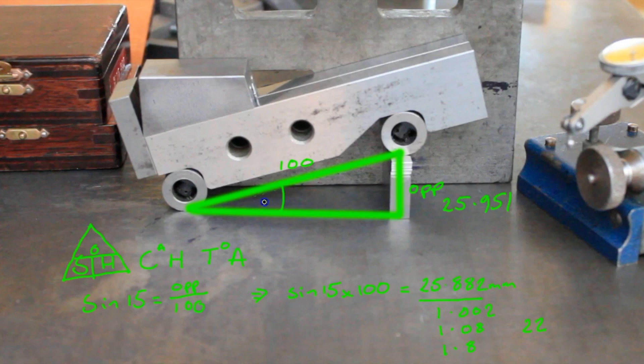Okay, so we're still going to use in essence the same type of equation, but this time we need to find the sine theta. So sine of the unknown angle theta is equal to the opposite, which in this case is 25.951, divided by 100.